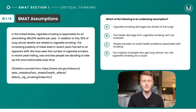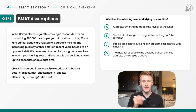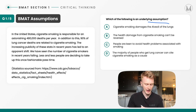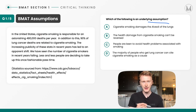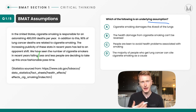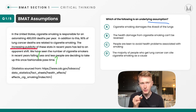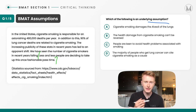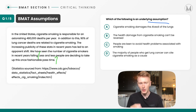Let's do an example together. The first thing I'm going to do is underline that we're talking about an assumption. Looking at the passage, we're talking about cigarette smoking and 480,000 deaths per year. We then see the conclusion: less and less people are deciding to take up this once fashionable pastime. The evidence given is that increased publicity of these stats in recent years has led to a shift — people are seeing these statistics and going away from smoking. We're asked what is the assumption.